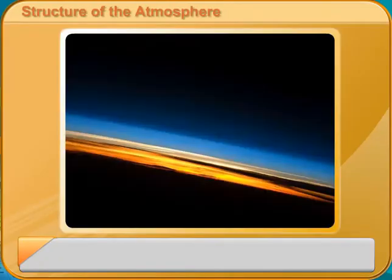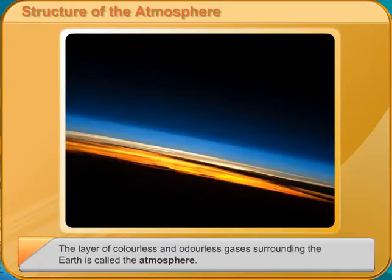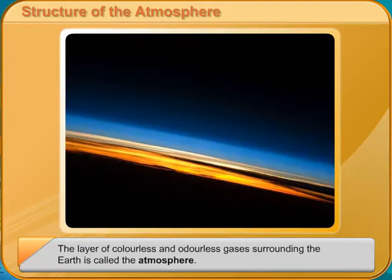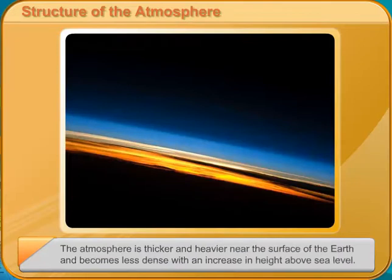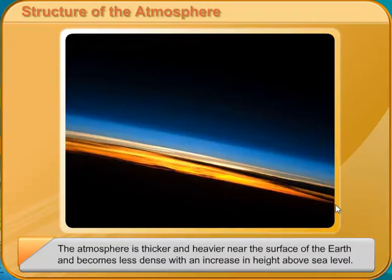The layer of colourless and odourless gases surrounding the Earth is called the atmosphere. The atmosphere is thicker and heavier near the surface of the Earth and becomes less dense with an increase in height above sea level.